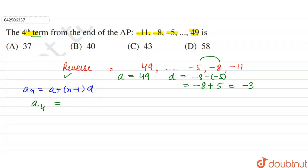So a₄ means a + (4 - 1) × d. Now a is 49, so 49 + 3 × (-3). This is equal to 49 + (-9), which is equal to 49 - 9.